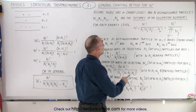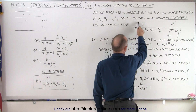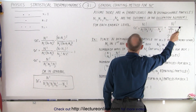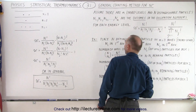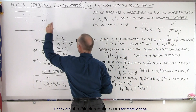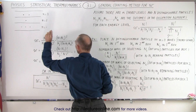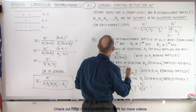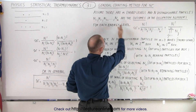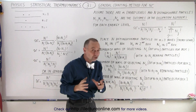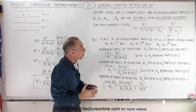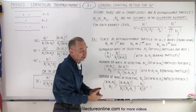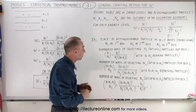We can call them the outcomes or the occupation numbers. In other words, the number of particles in each box or the number of particles in each energy level are considered the outcomes for each energy level or each box — the occupation numbers.